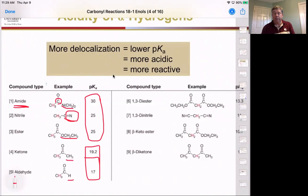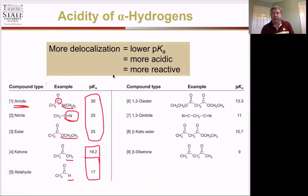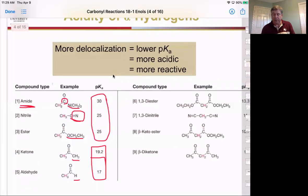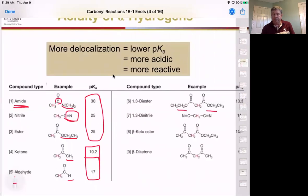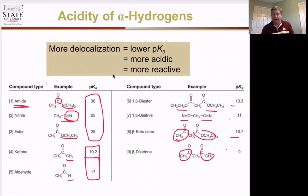On the other side, we have two different electron-withdrawing groups drawing from both sides. With an ester on both sides, we get a pKa of 13.3. Removing one drops it to 11. With a ketone on one side and an ester on the other, we drop to around 10. With two ketones on either side, we drop to 9. So the more electron-withdrawing groups adjacent to those alpha carbons, the more acidic — and therefore more reactive — those hydrogens become.